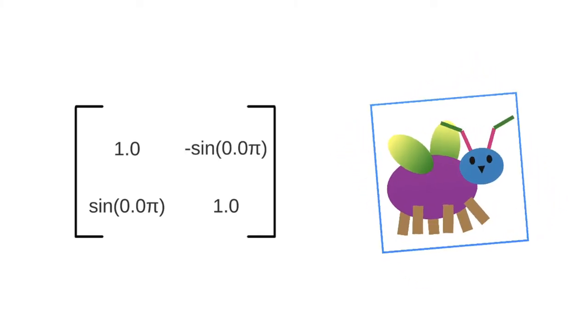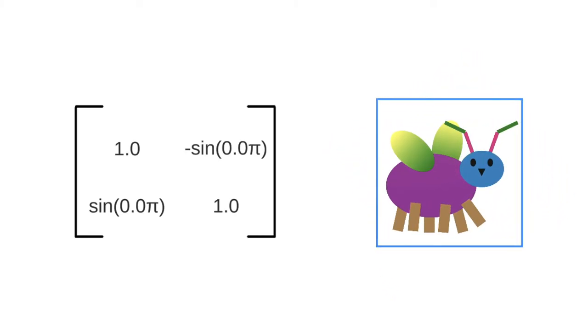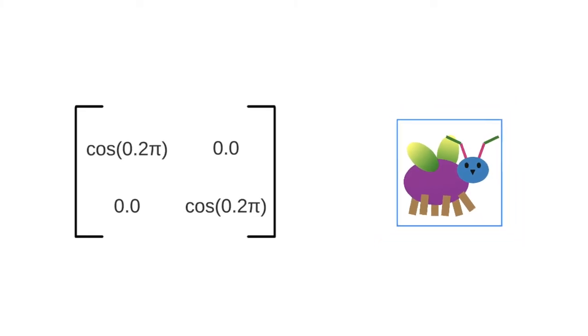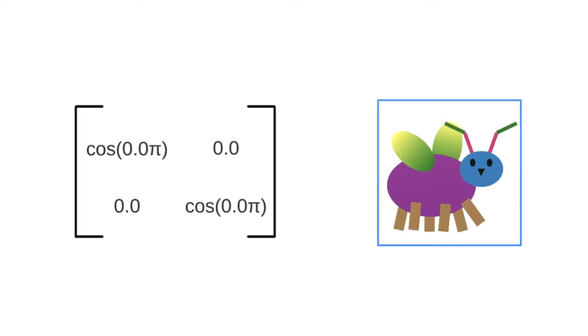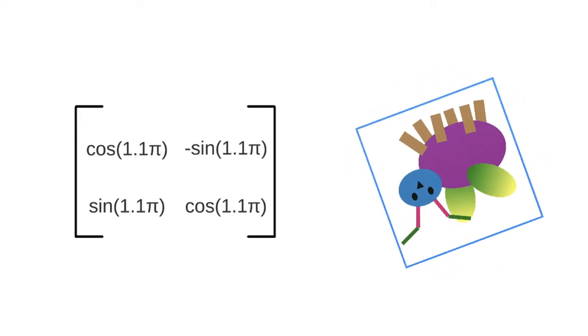The size changes a bit as it rotates, so we need to correct this size change. And it turns out that scaling by the cosine function exactly counteracts this size change. When we put these together, they combine to produce a perfect rotation.